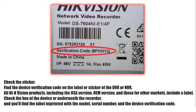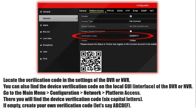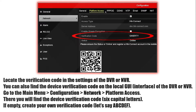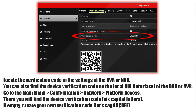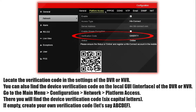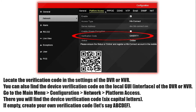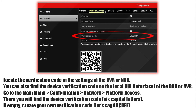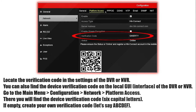Locate the verification code in the settings of the DVR or NVR. You can also find the device verification code on the local GUI interface of the DVR or NVR. Go to Main Menu → Configuration → Network → Platform Access. There you will find the device verification code — six capital letters. If it is empty, create your own verification code.